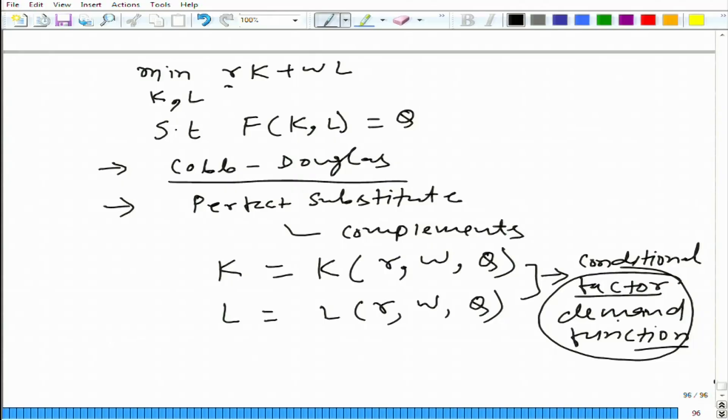Why demand function? This is the amount of capital that this particular firm demands from the market. To produce this particular output, the firm needs some capital and labor.